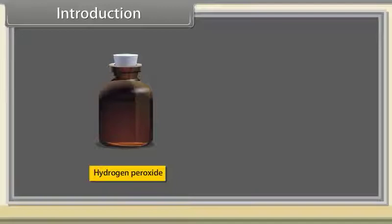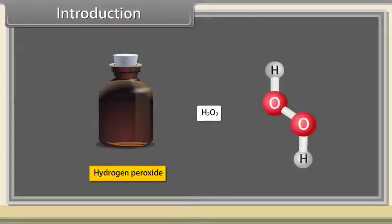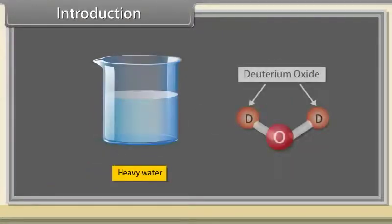It contains one oxygen atom and two hydrogen atoms. Hydrogen peroxide is a combination of hydrogen and oxygen with the chemical formula H2O2. Heavy water is deuterium oxide, another form of water which contains the hydrogen deuterium isotope.